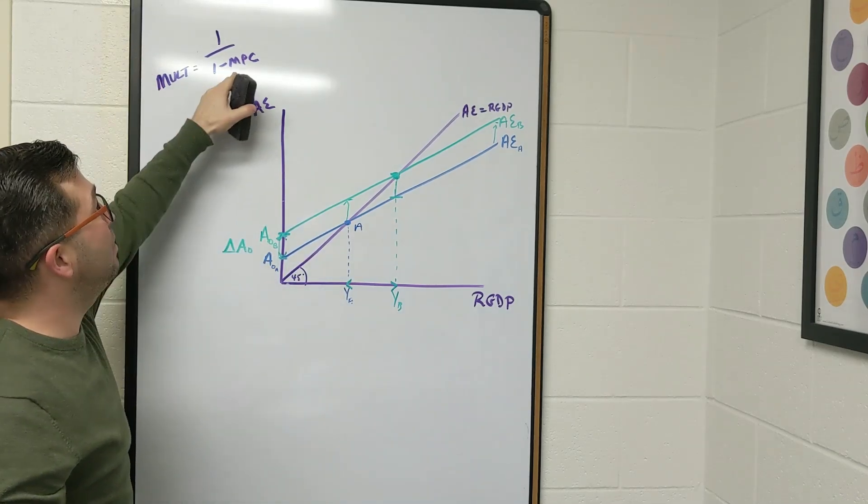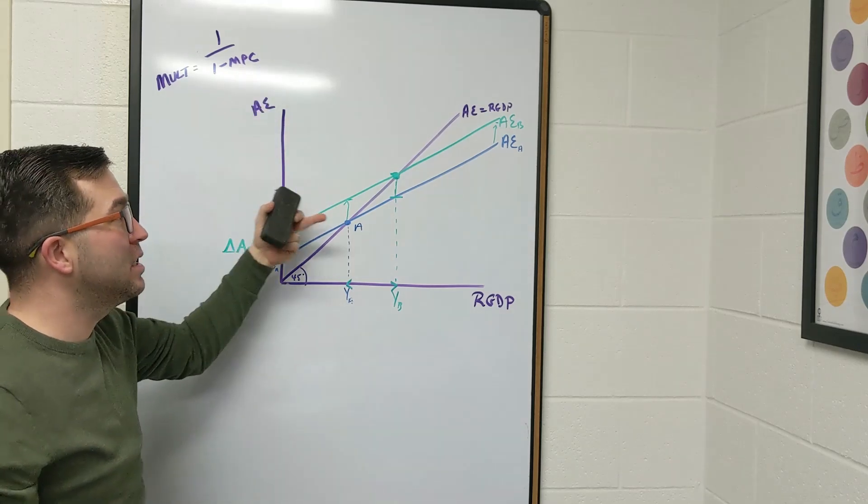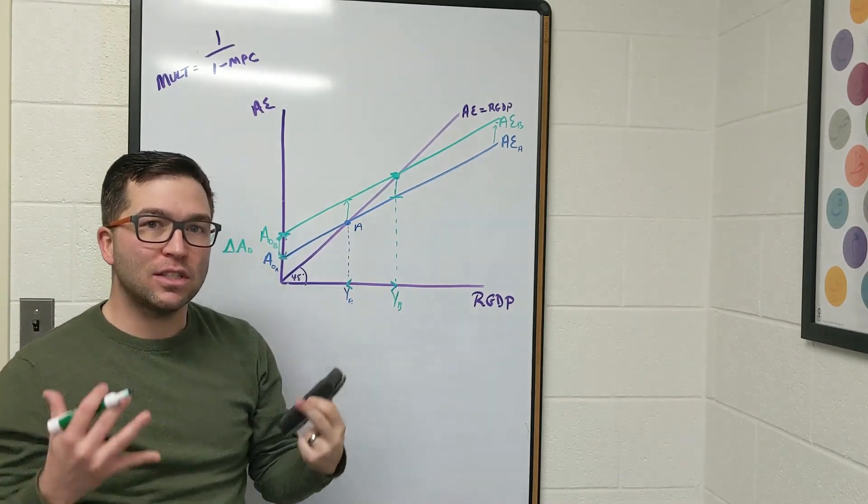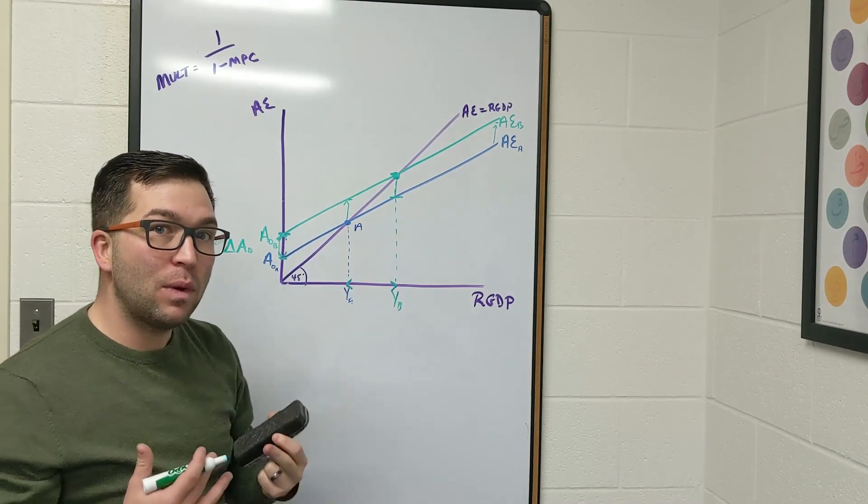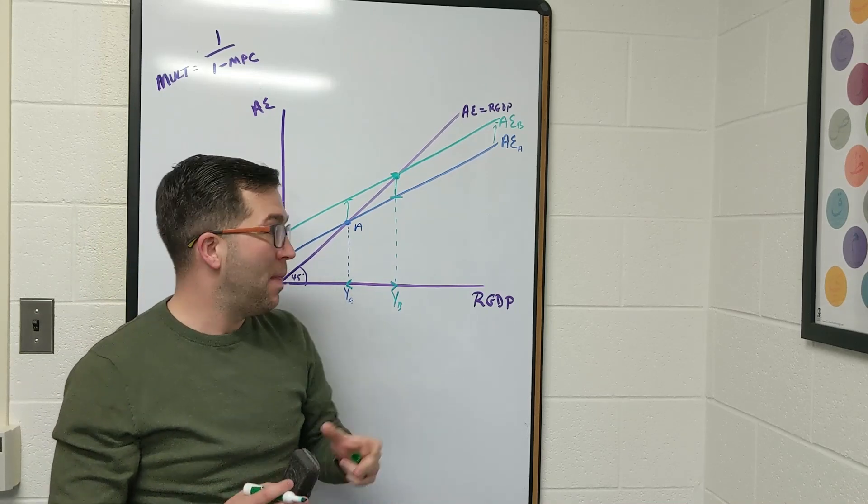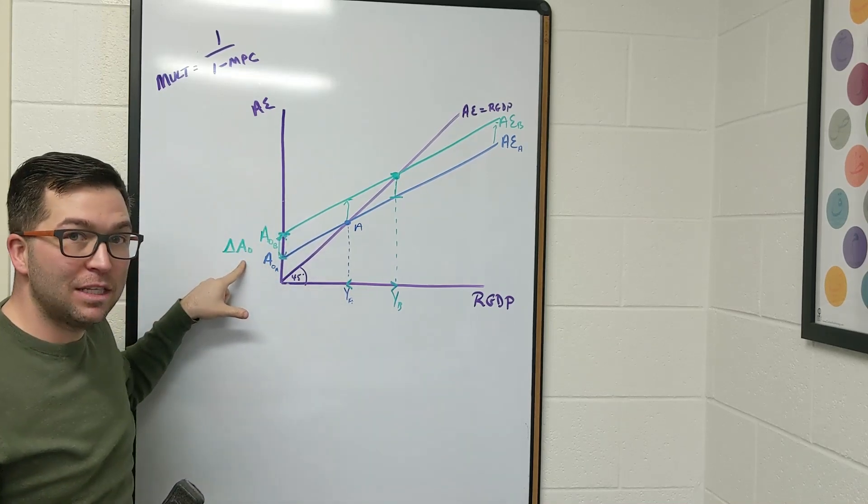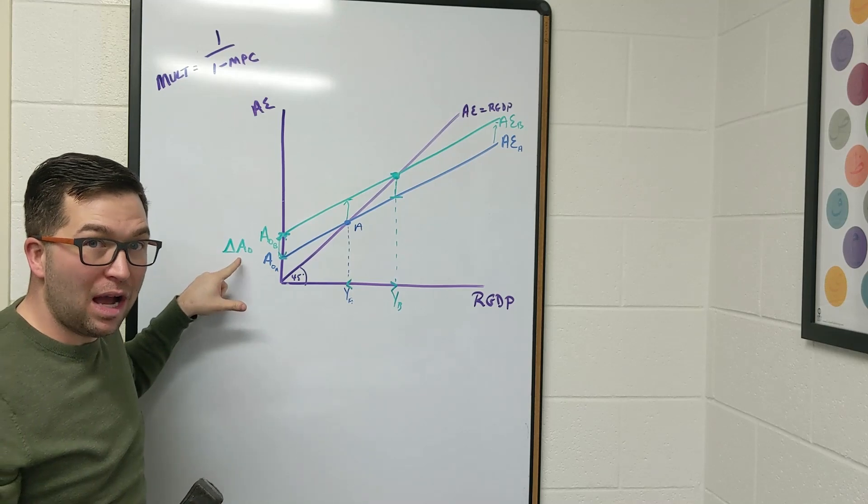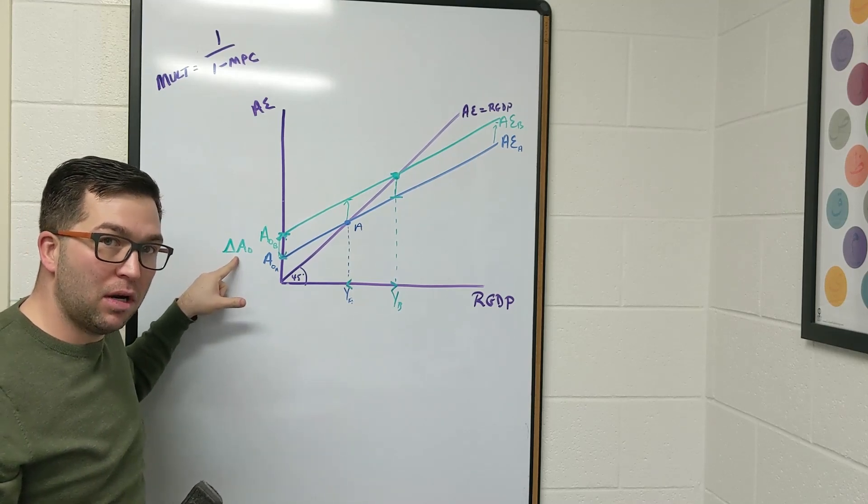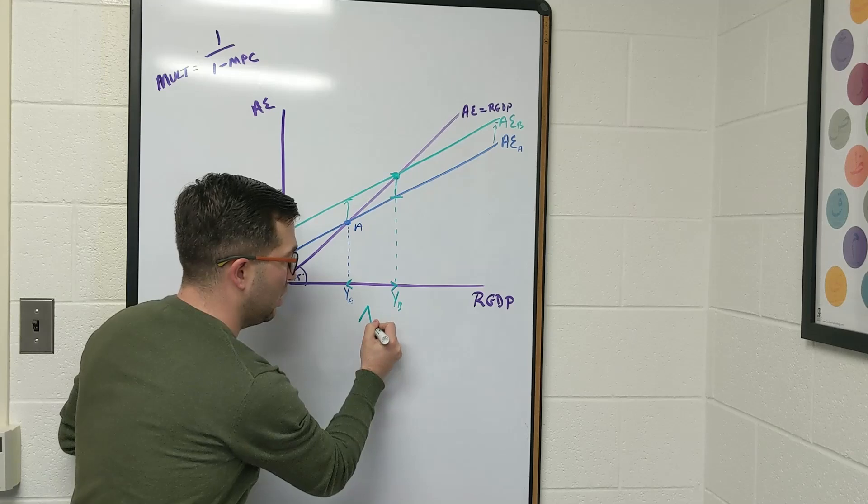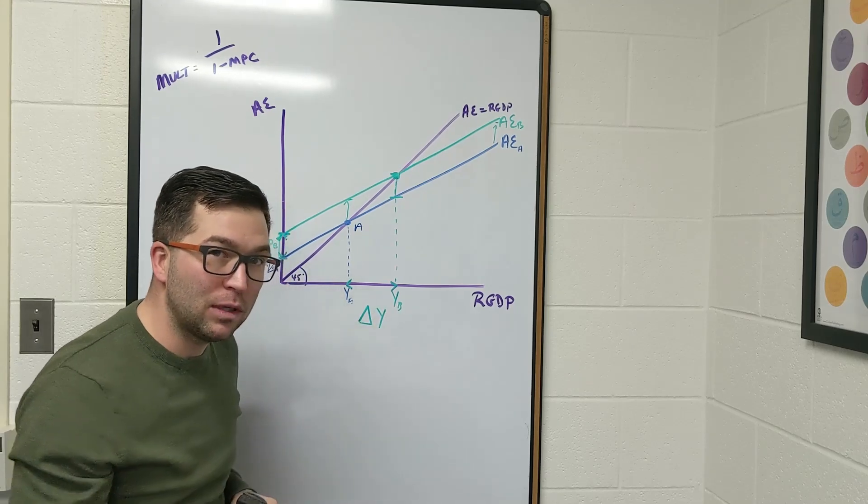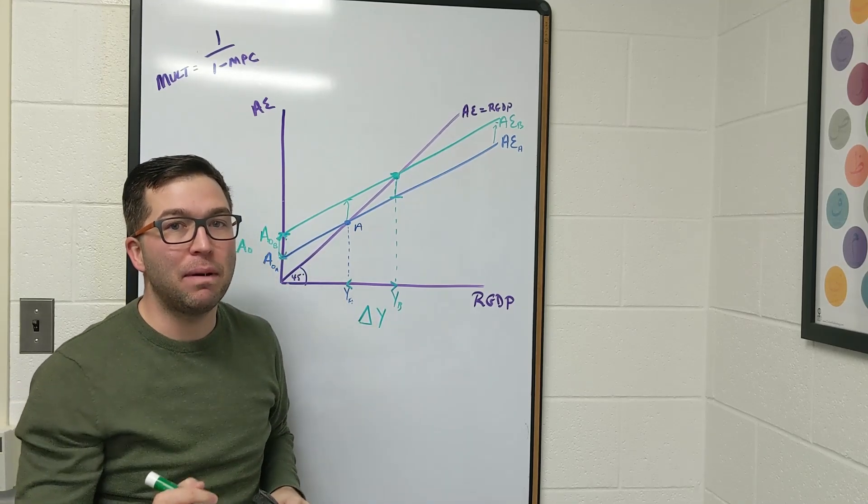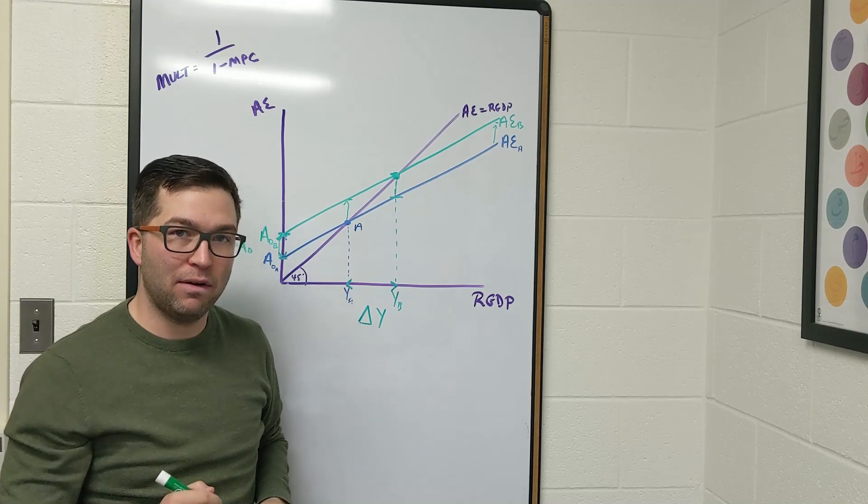Multiplier effect. It has to depend on the MPC, which is the slope of this line, so everything starts to connect. But the one thing that we really need to focus on is that when there is a change in autonomous spending—C bar, I bar, G bar, and X bar—there's going to be a change in that equilibrium level of GDP, and it's going to be by more. And that's what we call the multiplier effect.